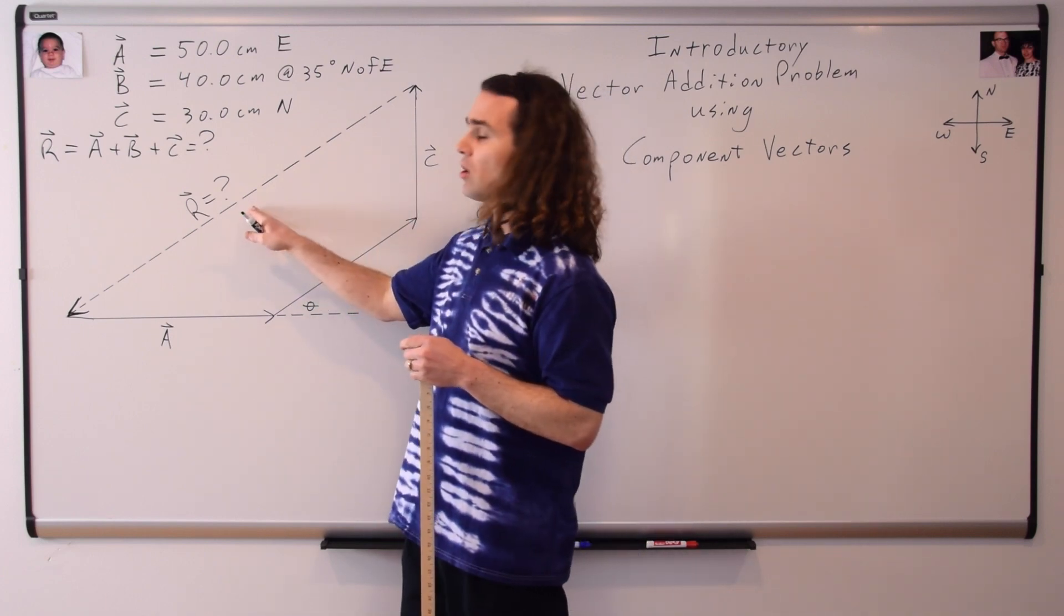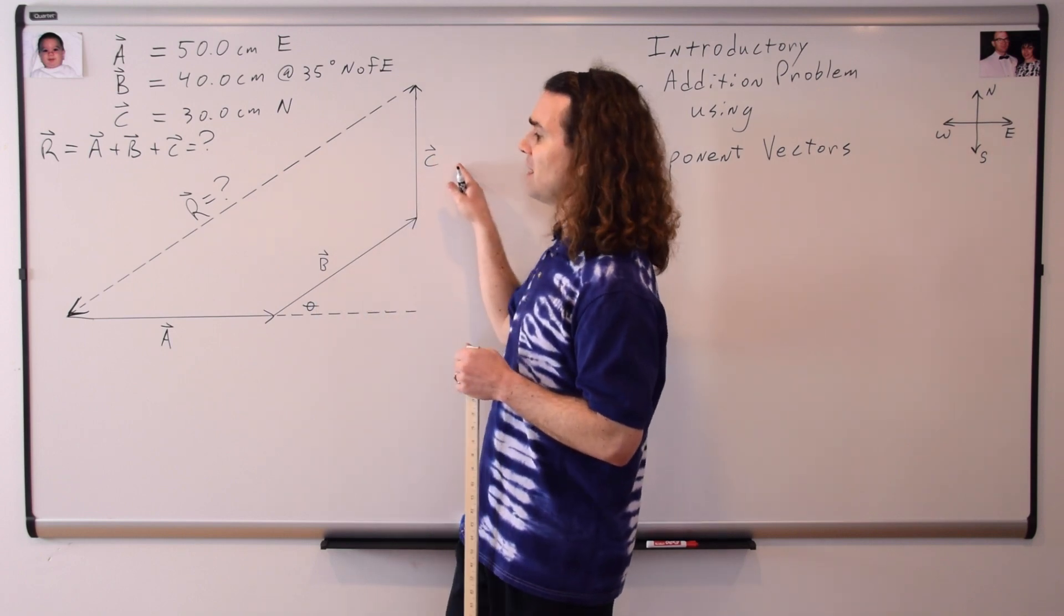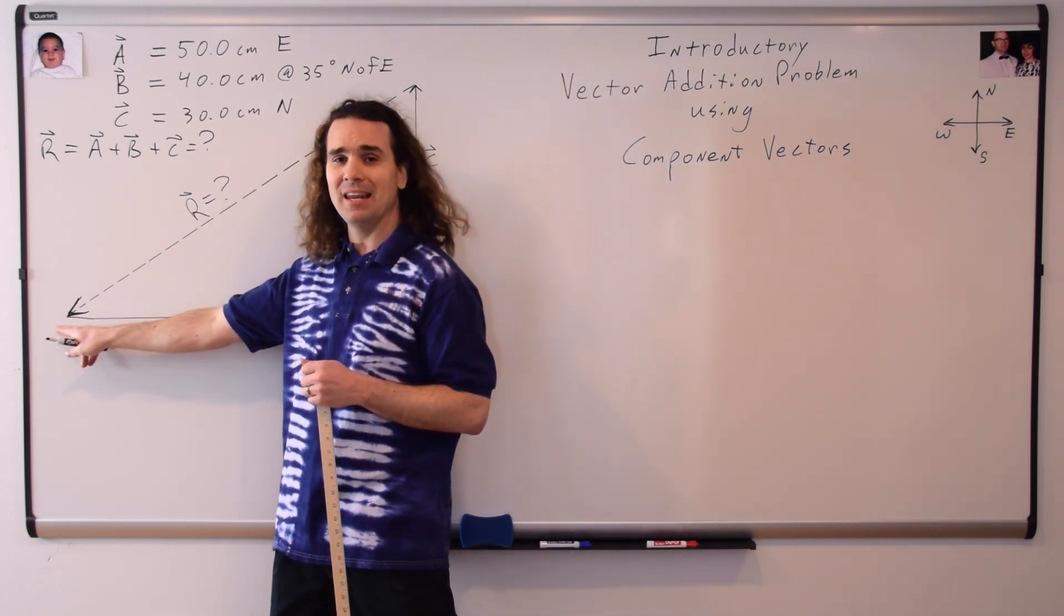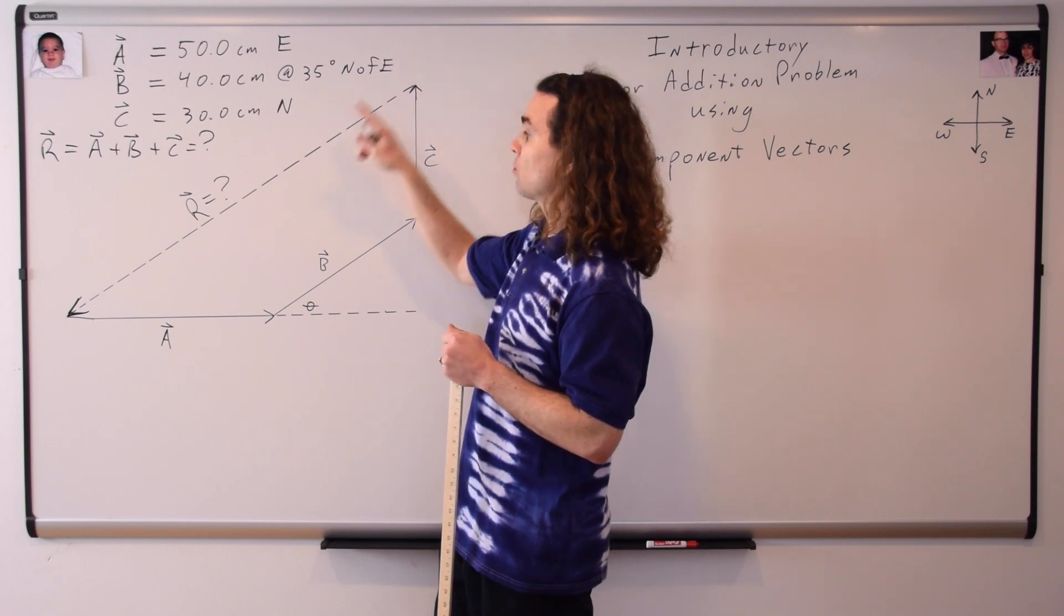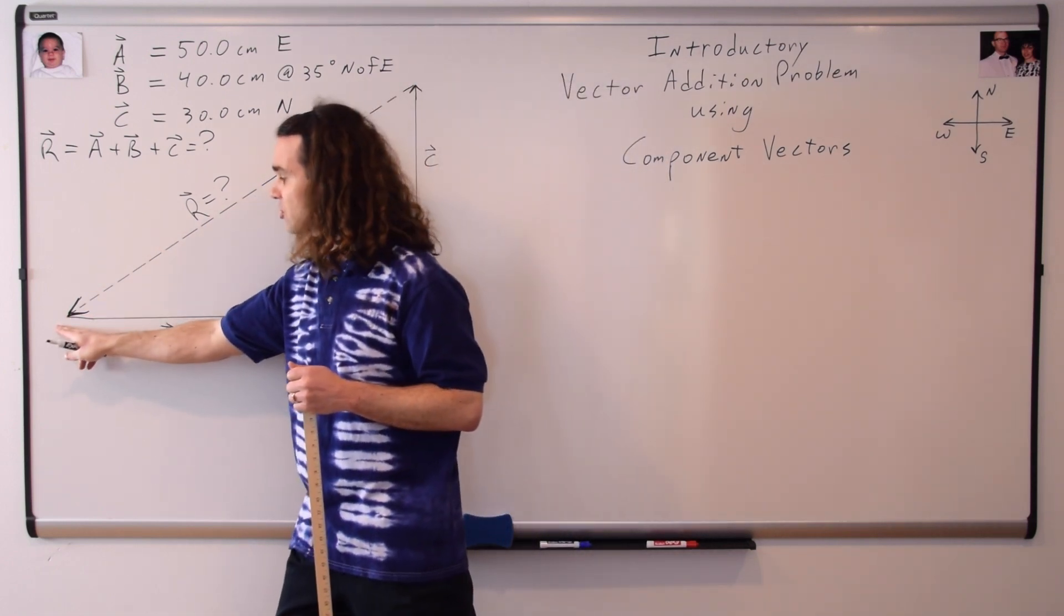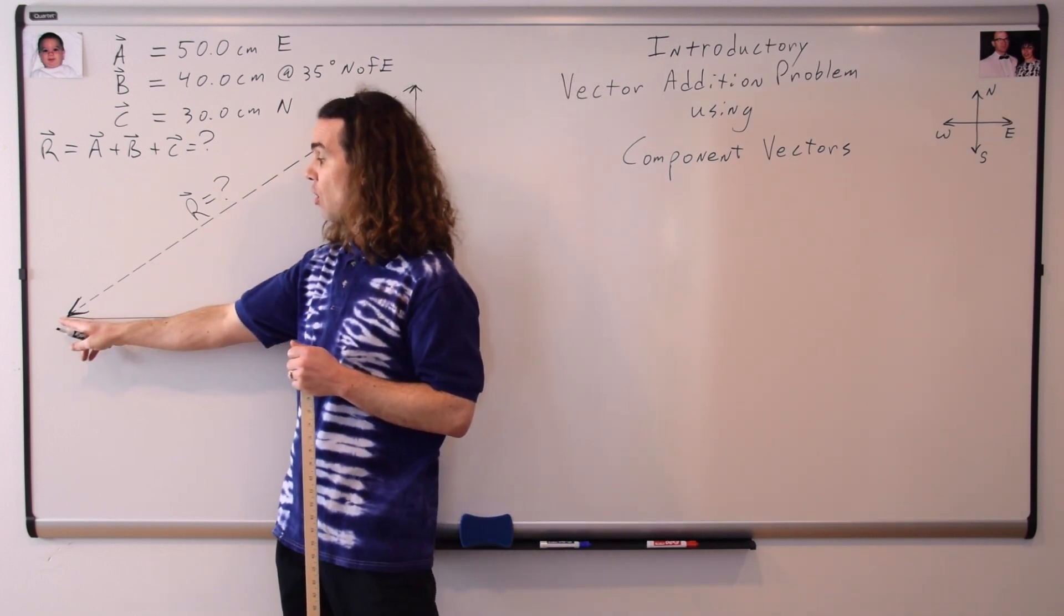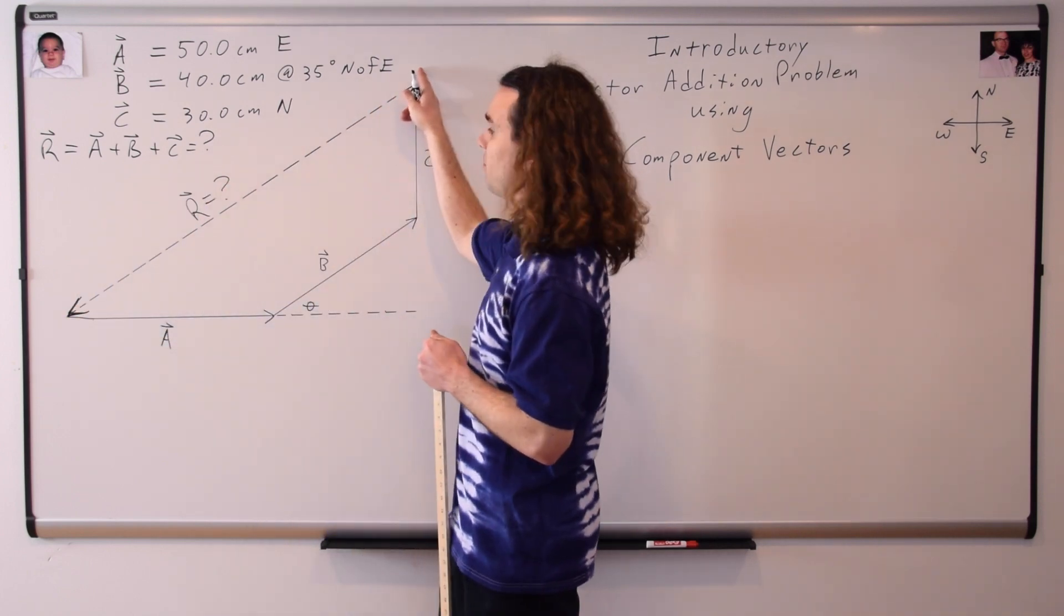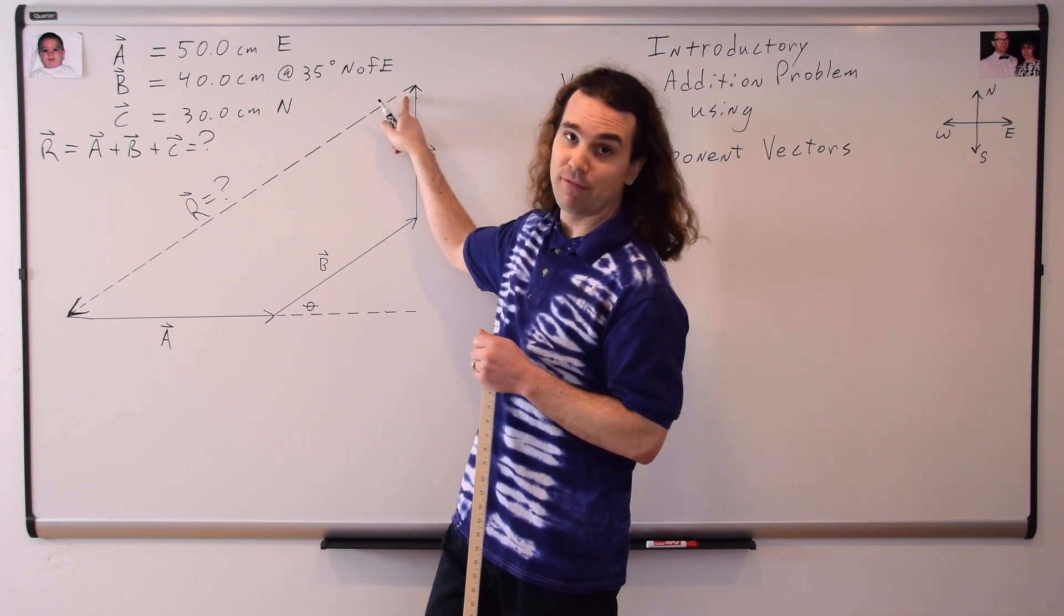Remember, this resultant vector is the sum of A, B, and C, so it's going to start at the beginning of A, and end at the end of C. So the resultant vector goes from the initial to the final point, and we indicate that by having the arrowhead go from the initial to the final point. So this resultant vector arrowhead should go up here on the final point.